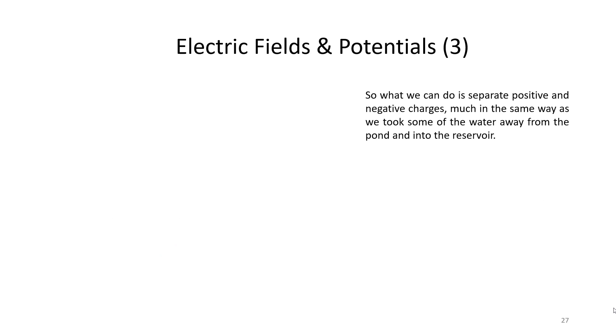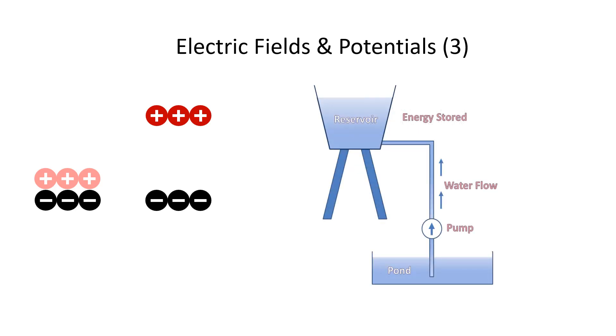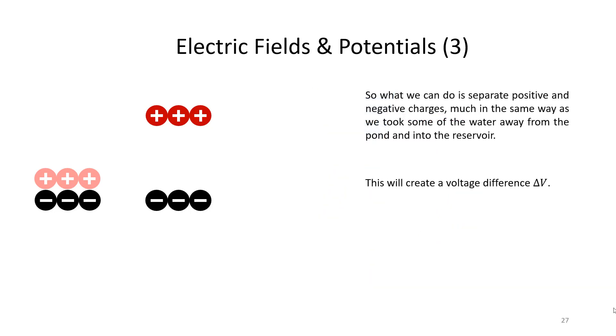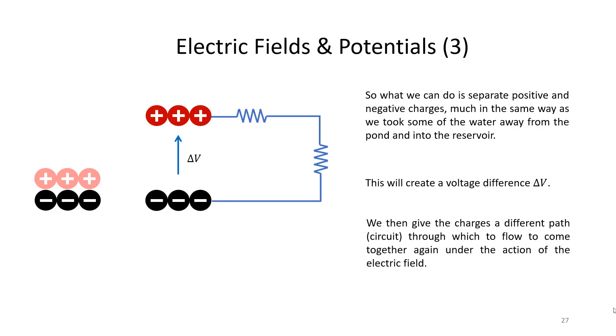So how can we use these physical properties to our advantage? Well, what we can do is separate positive and negative charges, much in the same way as we took some of the water away from the pond and up into the reservoir. This will give our positive charges some potential energy, which we can indicate with delta V. Note that the colour of the charges here is not chosen at random. The darker the charges, the more potential energy they have. So the light pink charges will have no potential energy at all, and the dark red charges will have the highest potential energy.